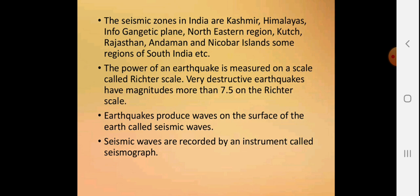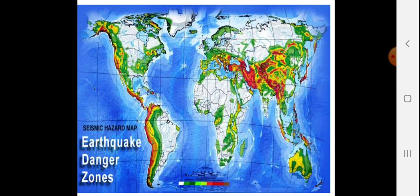The power of an earthquake is measured on a scale called the Richter scale. Very destructive earthquakes have magnitudes more than 7.5 on the Richter scale. Earthquakes produce waves on the surface of the earth called seismic waves. Seismic waves are recorded by an instrument called a seismograph.